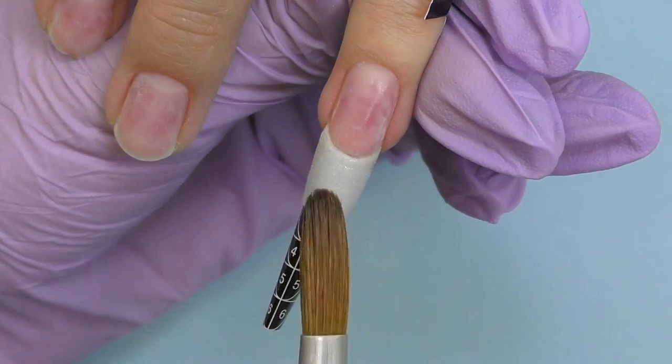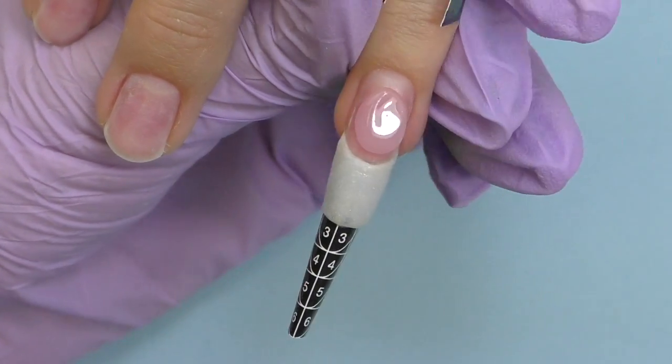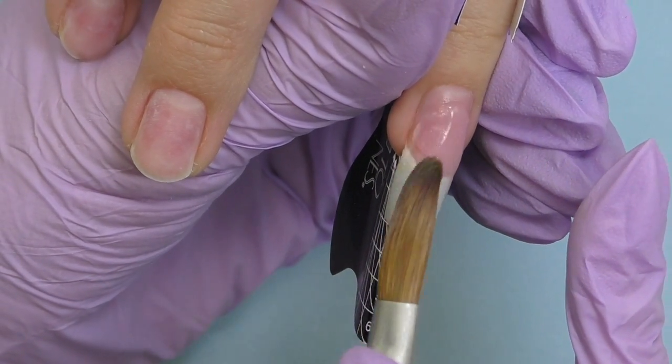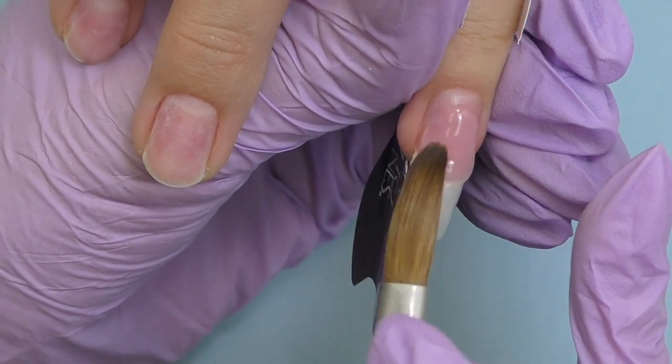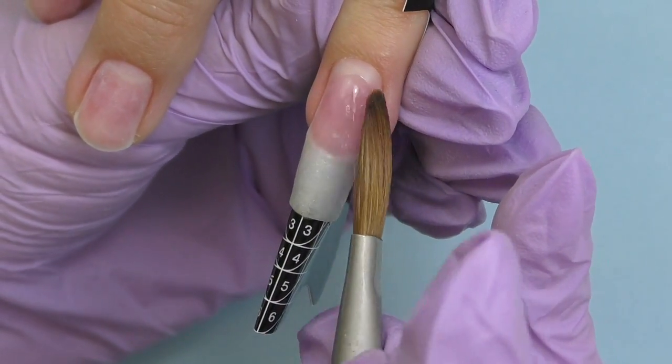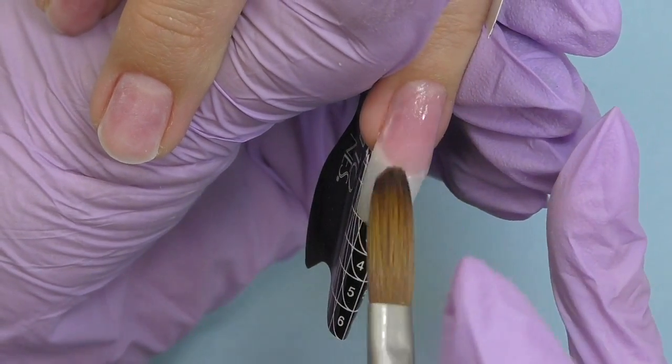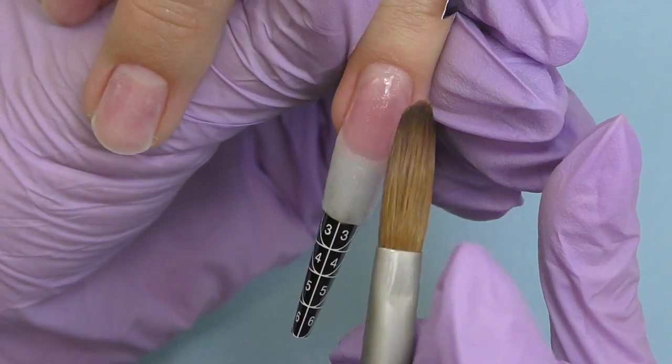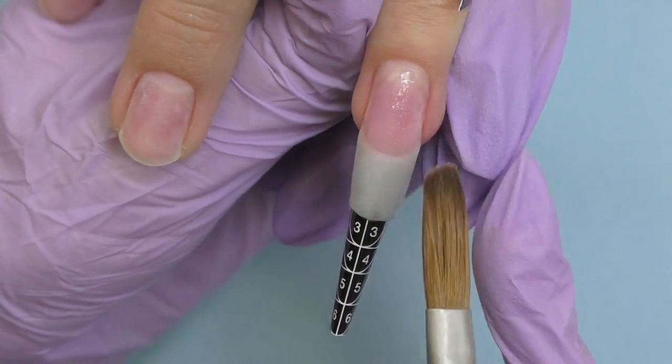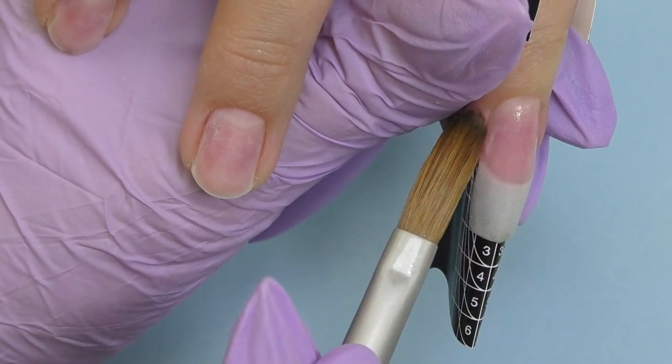I was also thinking of building the half moon near the cuticle also known as lunula with the milky white color but she has such beautiful natural lunulas and since I'm going to use transparent pink color we will still see it so I decided to keep it just the way it is. I would love to hear your thoughts on this trend as well, especially with acrylic. What kind of products do you usually use to create nails that are going to look like natural nails?